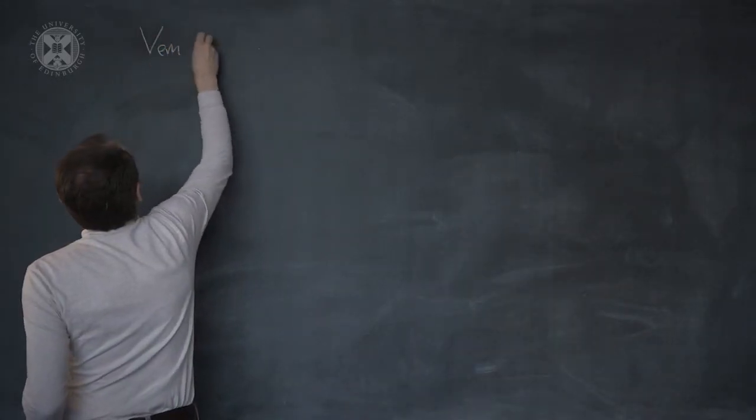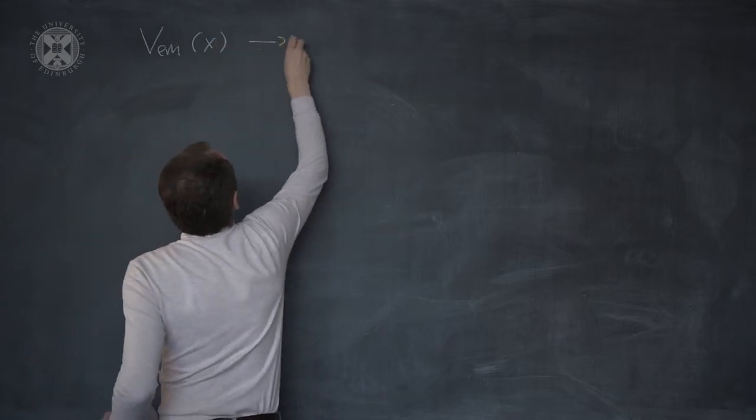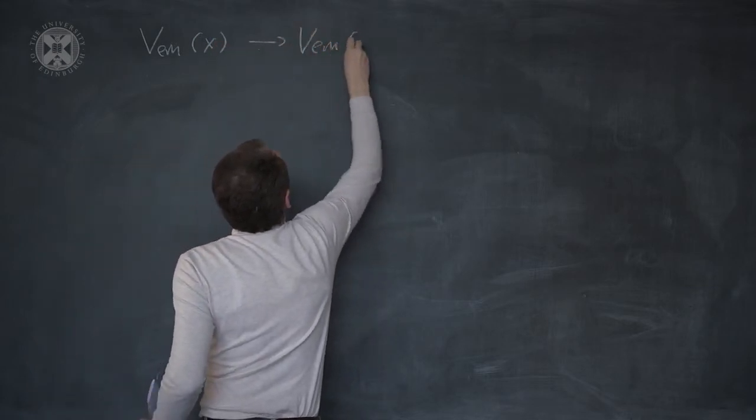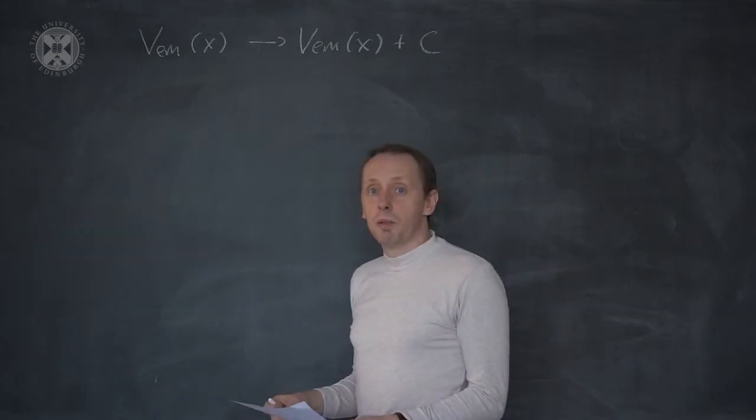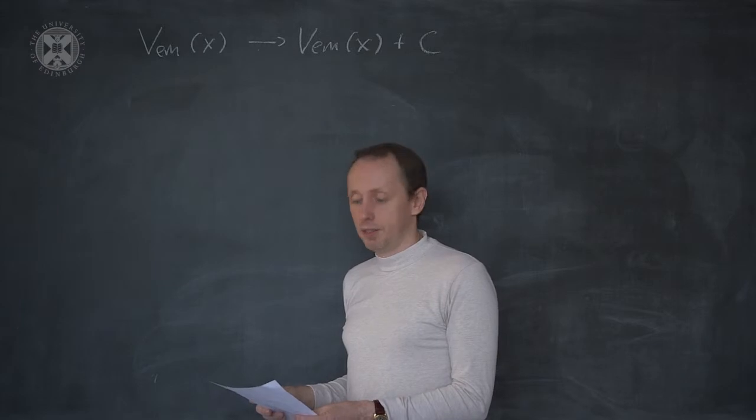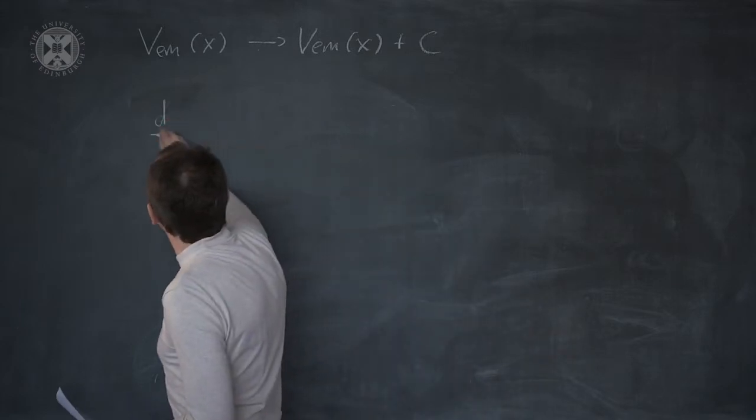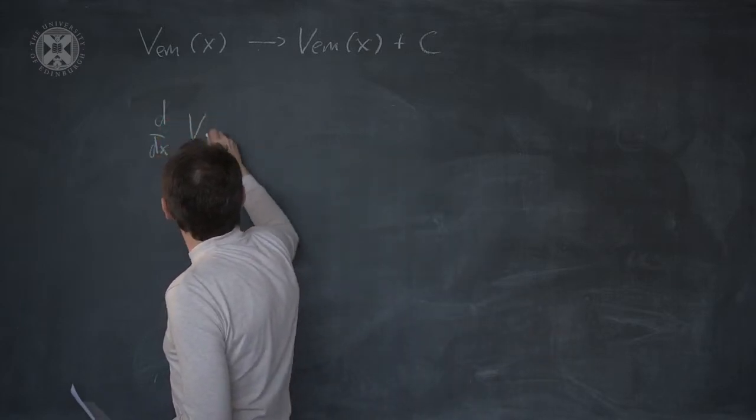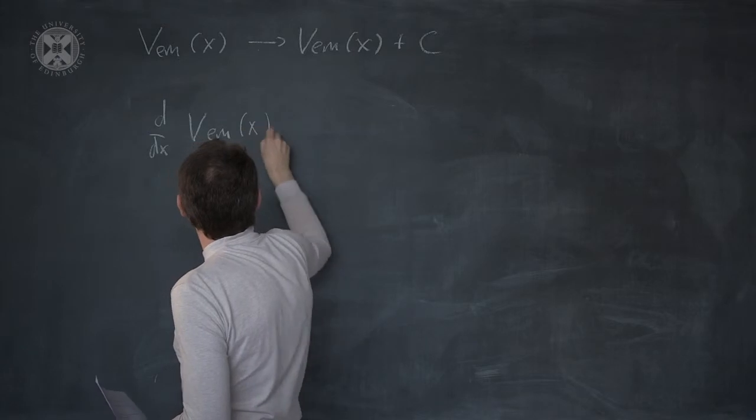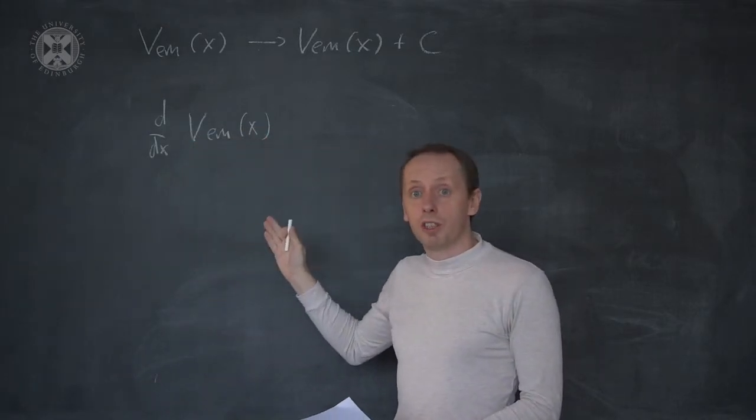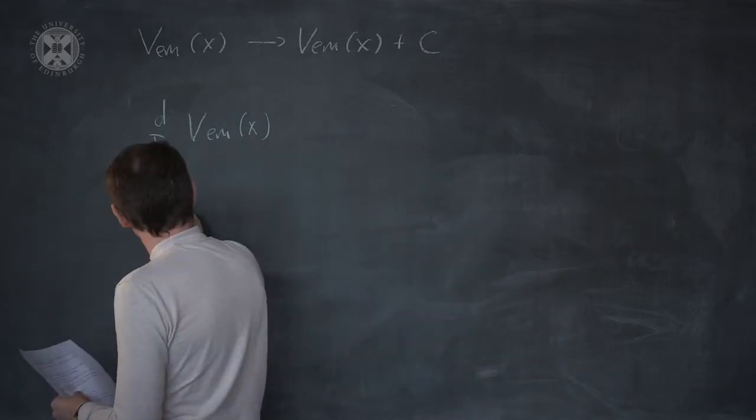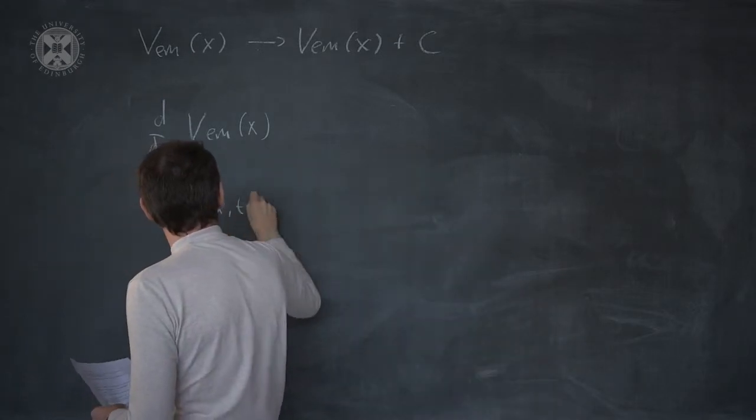You know of this because you can always shift the electrostatic potential by a constant without changing the physics. This is possible because Maxwell's equations depend only on the slope of the potential. But even more, Maxwell's equations do not depend on the time derivative of the potential. So if you make the potential also a function of time, the spatial slope does not change.